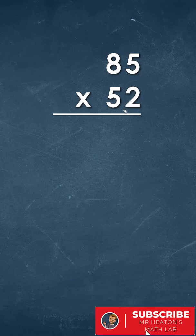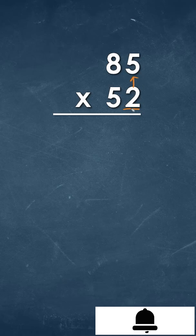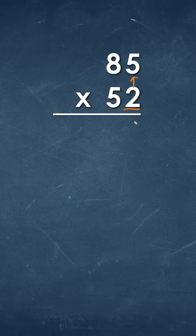When we multiply by multiple digits we always start on the right side on the bottom here. So we're going to take 2 and we're going to multiply it by 5. So 2 times 5 is going to be 10.